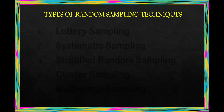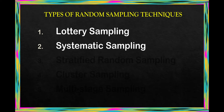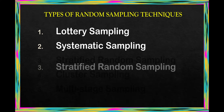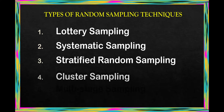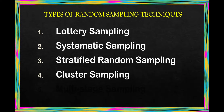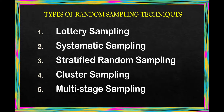There are five types of random sampling techniques. The first one is lottery sampling. Second, systematic sampling. Third, stratified random sampling. Fourth, cluster sampling. And fifth, multi-stage sampling.